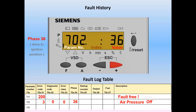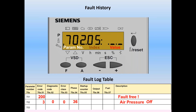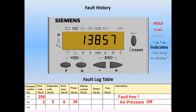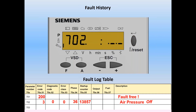We do a plus and move to index 05, which shows a value of dot-dash-dot-dash. This indicates the value is too big to display in those four spaces. Hold the enter button for two seconds and let go, and the screen transfers over to the full value — in this case 13,857. That's the cycle count on this burner when this error occurred. We put 13,857 in the chart. There's no time and date stamp, but the cycle counter tells us how frequently this problem is occurring. Push enter again to return to index 05.